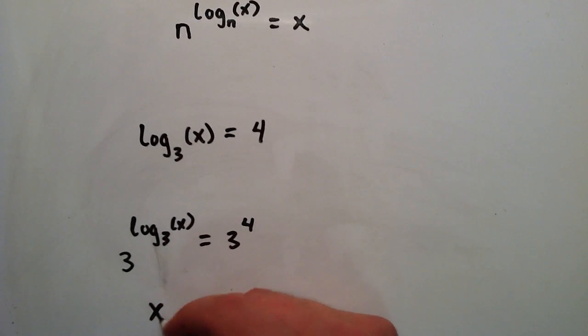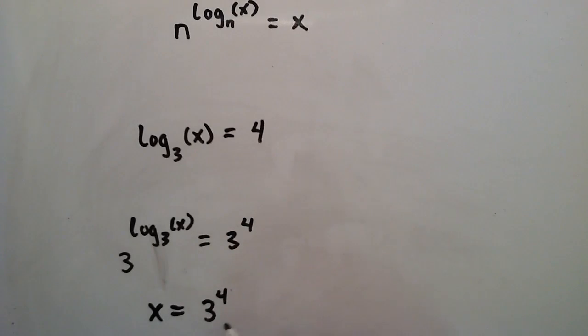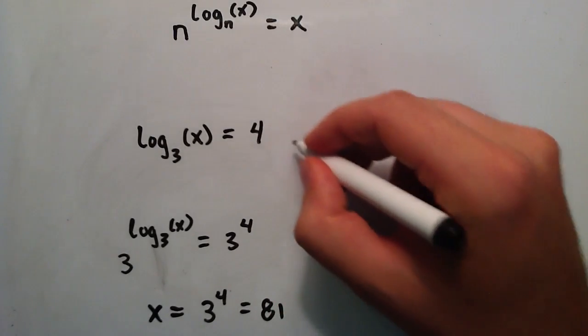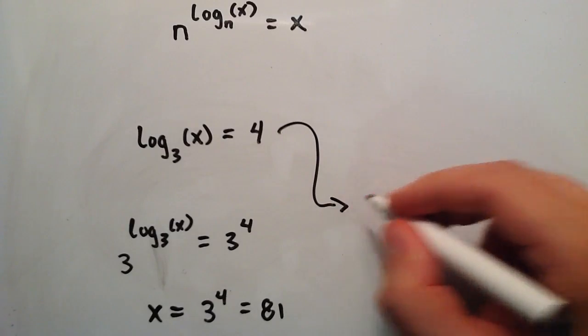So we have x equals 3 to the fourth, which is 3 multiplied by itself four times. So 3 times 3 times 3 times 3 equals 81. So we found our x equals 81.